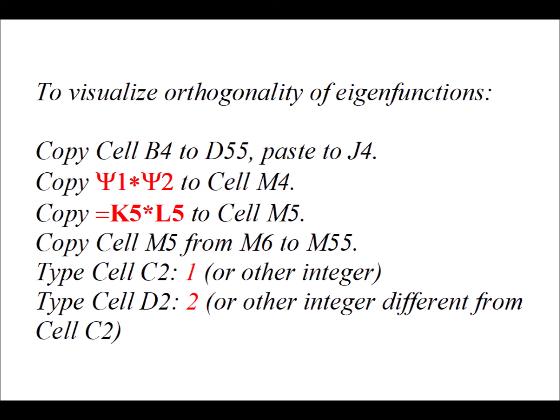The final visualizations show that eigenfunctions with different eigenvalues — different values of n — are orthogonal to each other. We copy cells B4 to D55 and paste to J4. We label cell M4 with psi1 times psi2. We copy the formula equals K5 times L5 to cell M5. We can type different values in cells C2 and D2, making sure the numbers are different from each other. The resulting graph will demonstrate the orthogonality of eigenfunctions with different eigenvalues.